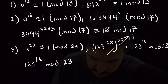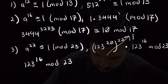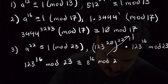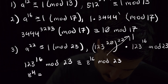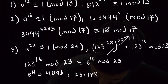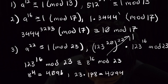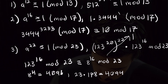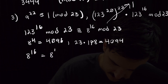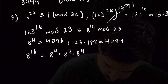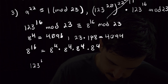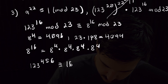Now that we've reduced our exponent all we can, we're going to want to reduce our base. So we reduce 123 mod 23, and that gives us 8. So we have 123 to the 16th is congruent to 8 to the 16th mod 23. Now we know that 8 to the 4th power is equal to 4096, and 23 times 178 is equal to 4094, which means 8 to the 4th is congruent to 2 mod 23. So we can rewrite 8 to the 16th as 8 to the 4th four times, with each being congruent to 2 mod 23. To summarize, we have 123 to the 456 is congruent to 16 mod 23.